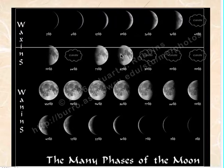You want to be able to name all of them: waxing crescent, waxing gibbous, waning gibbous, waning crescent. If you can do that, you're the master! Congratulations — we'll see you on the next video, have a good one.